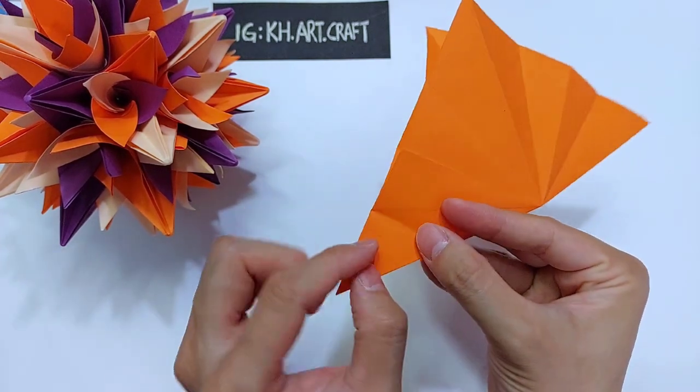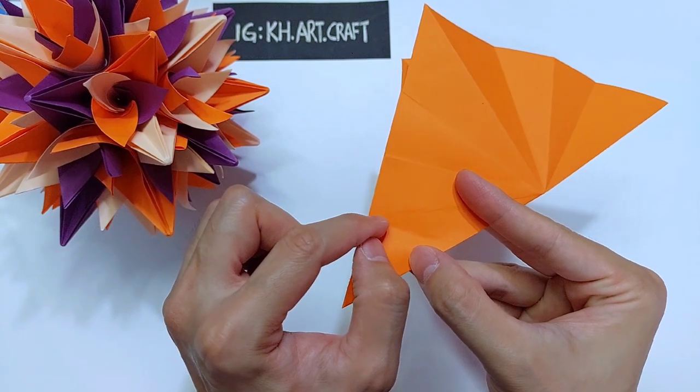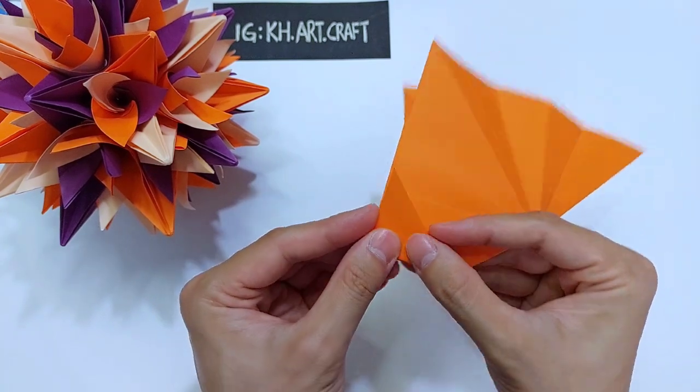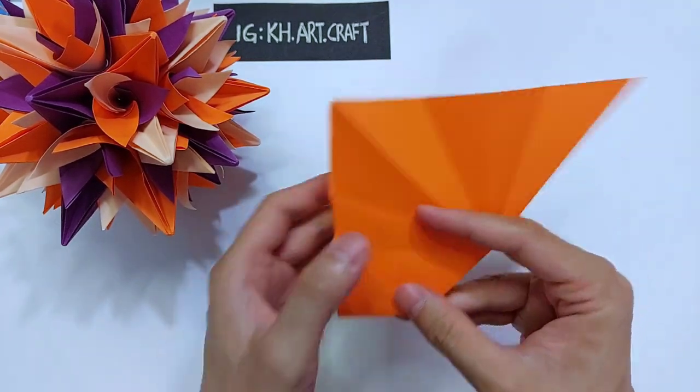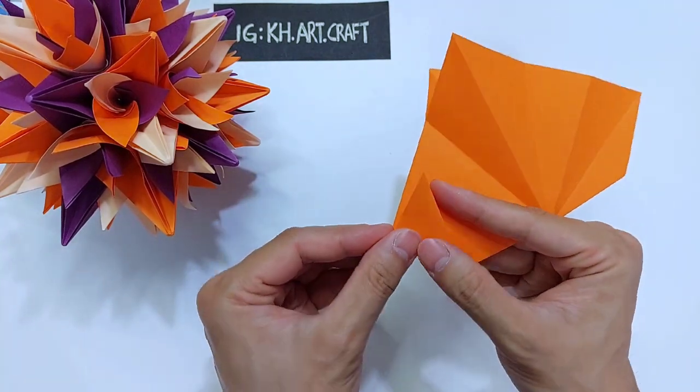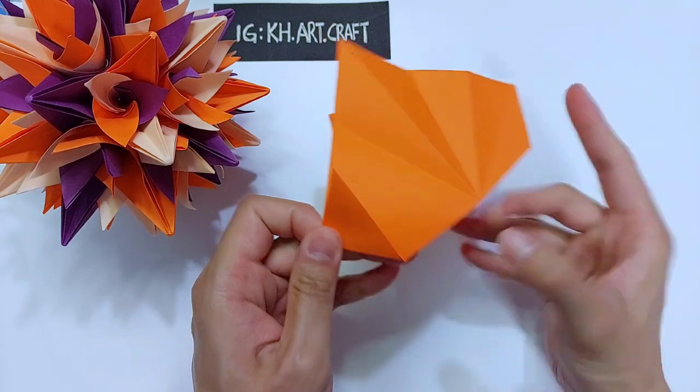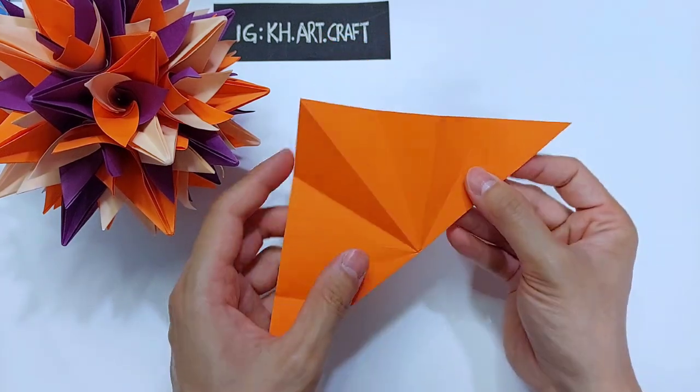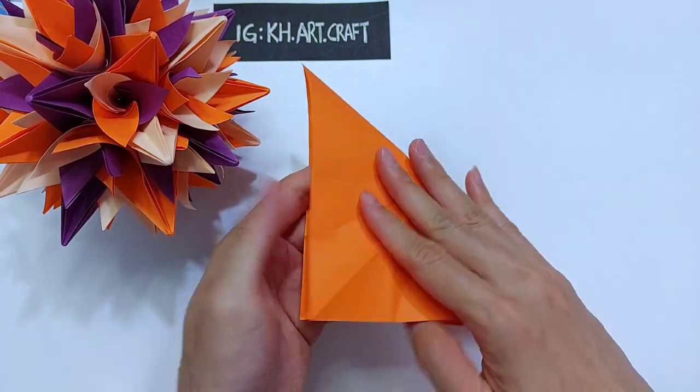The center line will be the intersection here. Repeat this step for all four sides. This is the second one. Once these two are done, open up and fold the other side.